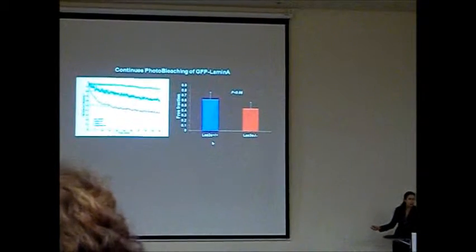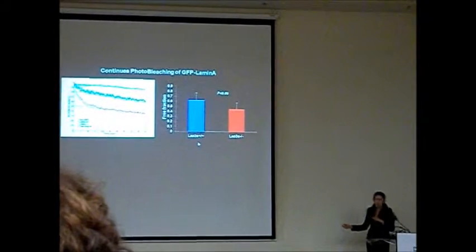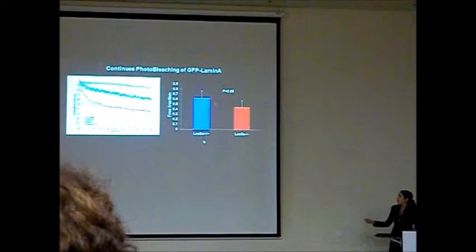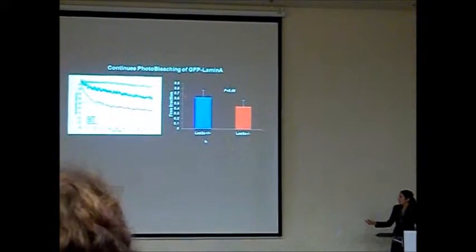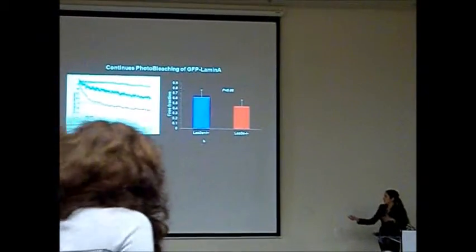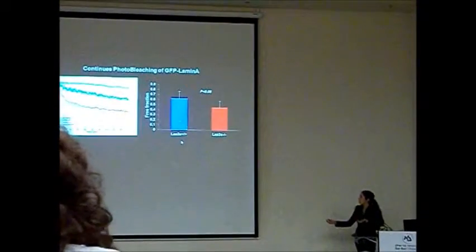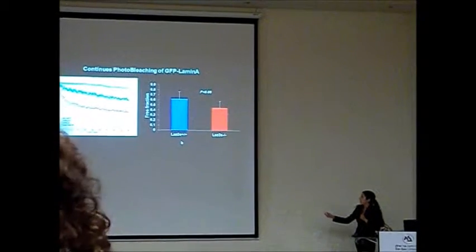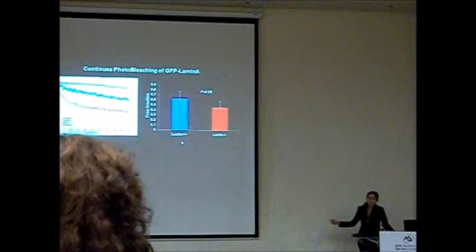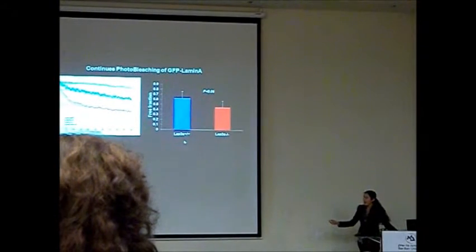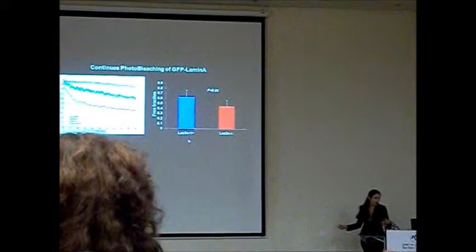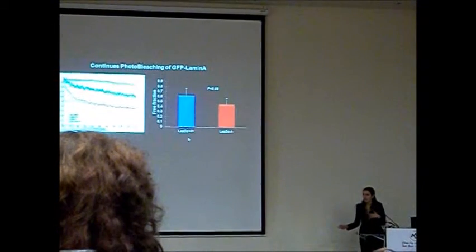So from such kind of experiment we can calculate the free fraction of molecules of lamin A and compare between normal cells, like you can see here, LAP2α plus, this is normal cells, and there is LAP2α depleted cells. And we saw that in LAP2α depleted cells, lamin A is much more bound to chromatin. So our suggestion was true.